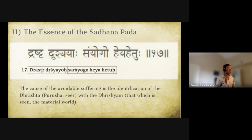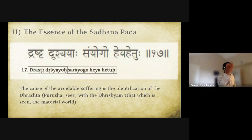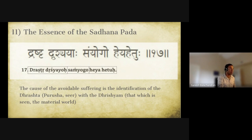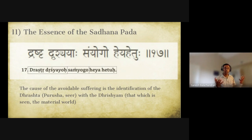The essence of the Sadhana Pada is this sutra: drashtu drishyayoh sanyogah heya hetuh. Drashtha is the seer (the purusha); drishyam is the seen; sanyogah is their coming together, their identification. Heya hetuh means the cause of the avoidable suffering. So the cause of avoidable suffering is the identification of the drashtha (purusha) with the drishyam (the scene). This is the most important concept in the second chapter and in the Yoga Sutras generally — the biggest problem is the purusha thinking, because of all the vrittis, that it is the body.